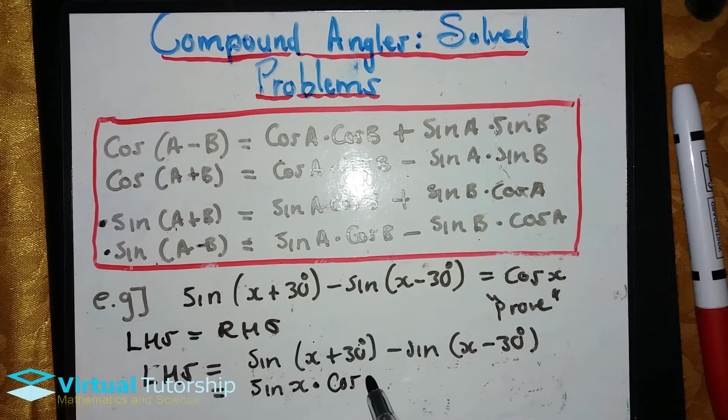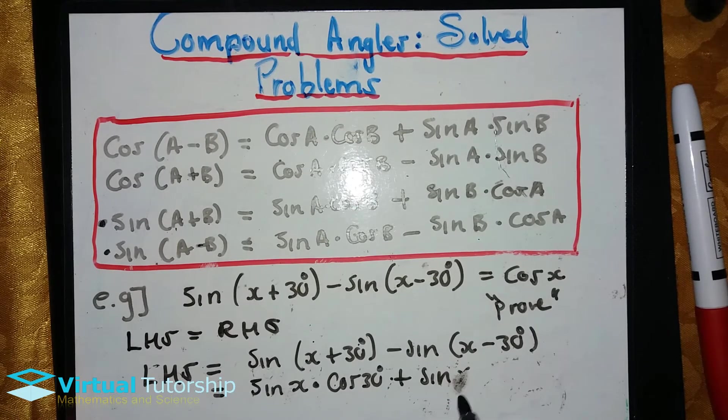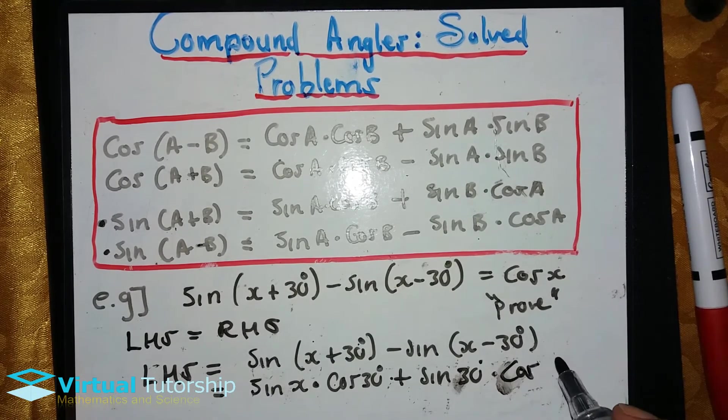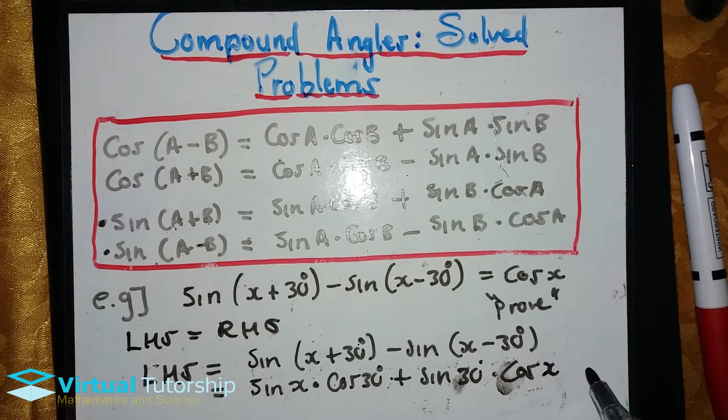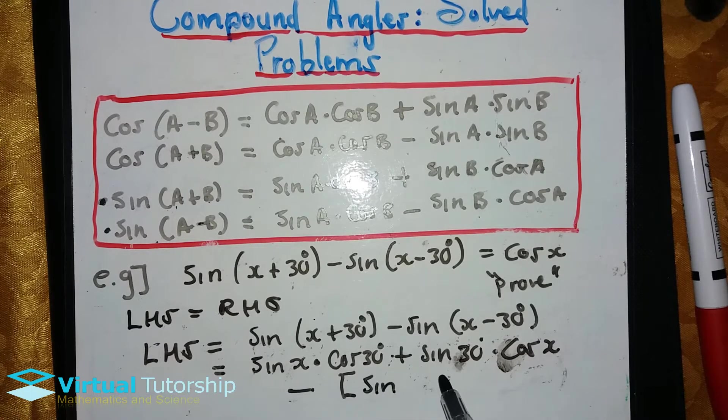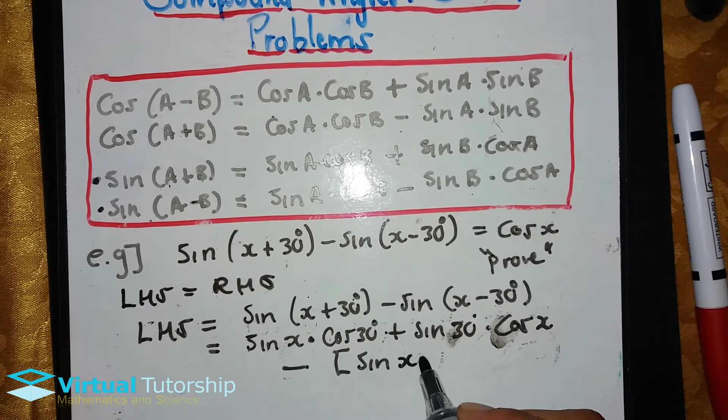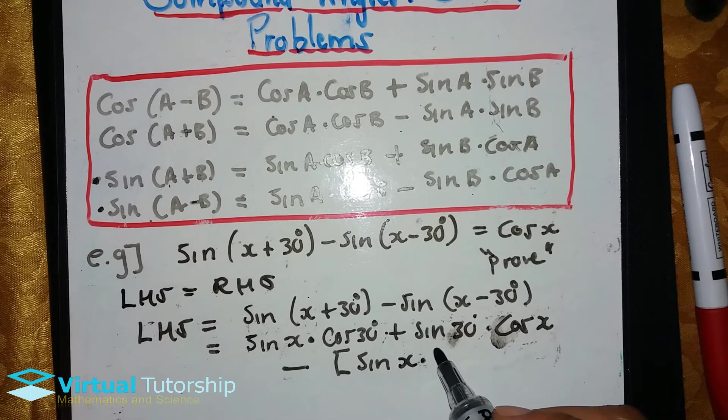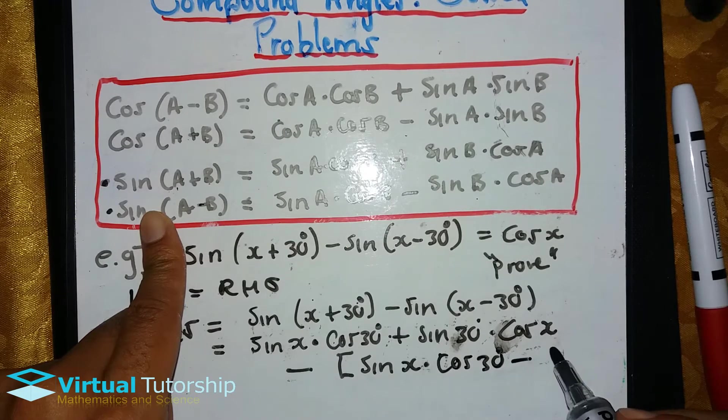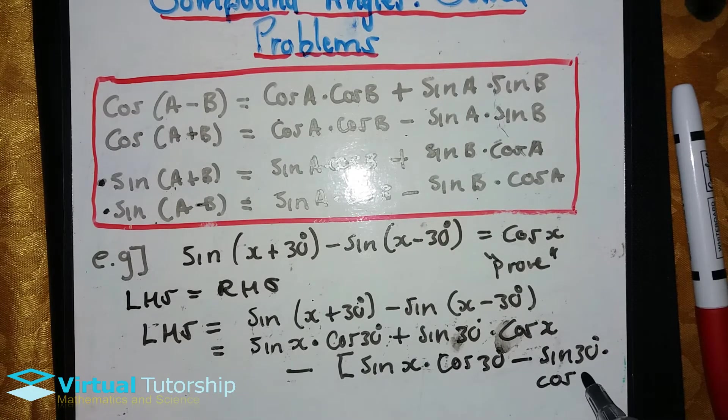It's sine x times cosine 30 degrees plus sine 30 degrees times cosine x, minus in brackets. Remember the negative sign affects everything inside. So it's sine x times cosine 30 degrees minus sine 30 degrees times cosine x.